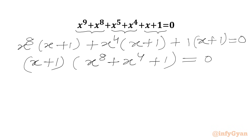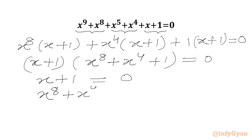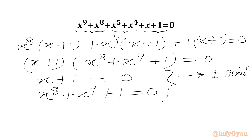Now we will use the zero-product rule. We can write either x plus 1 equal to 0, or x power 8 plus x power 4 plus 1 equal to 0. So we have to solve these two equations. From the first equation we are going to get one solution only, and from the second equation we are going to get 8 solutions.